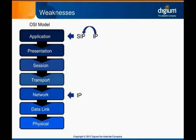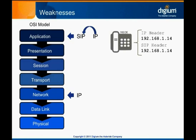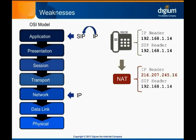Even though SIP inarguably violates the OSI model, it's understood and generally accepted. Unfortunately, this quirk can cause problems under certain network conditions. The most common of these are when one endpoint is on a private network behind a NAT, or Network Address Translation Gateway. NAT gateways allow multiple devices inside the NAT to appear as if they all have the same public IP address outside the NAT.